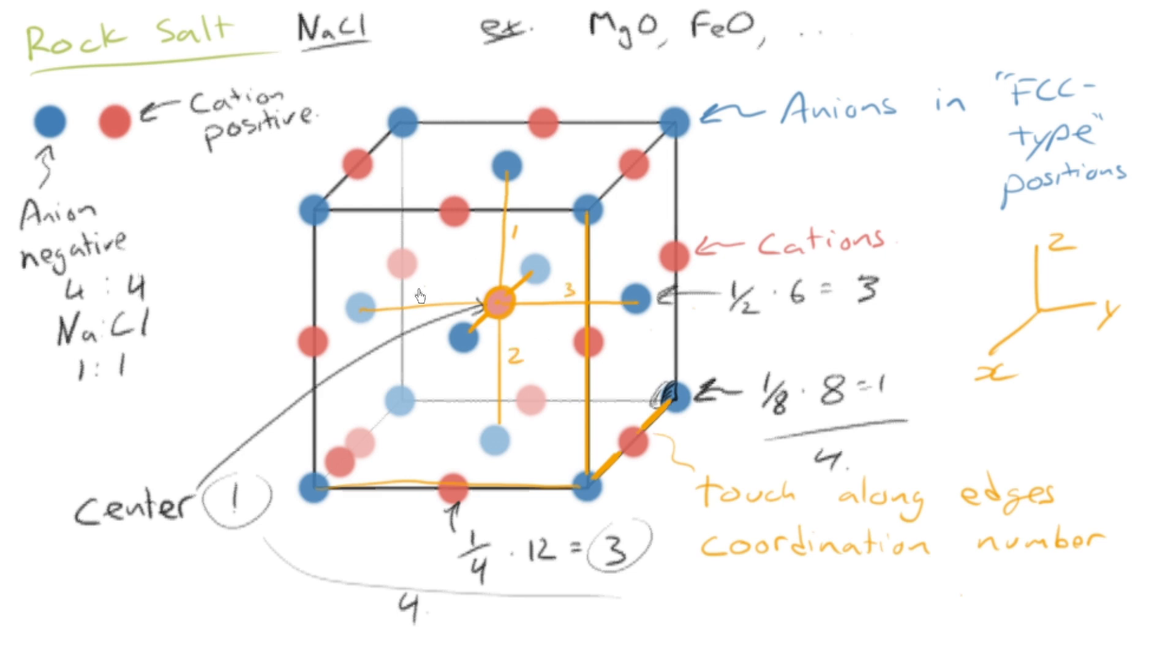Okay, and the coordination number is 1, 2, 3 to the right, 4 to the left, 5 back, and 6 out in front. Coordination number equals 6. So that is a real quick look at the rock salt crystal structure. Thanks a lot.